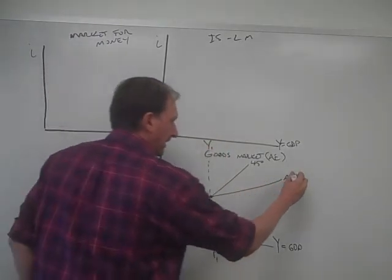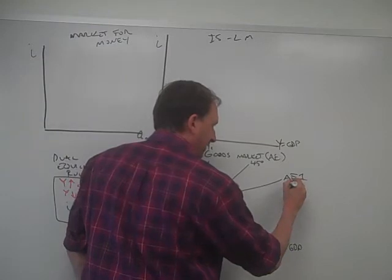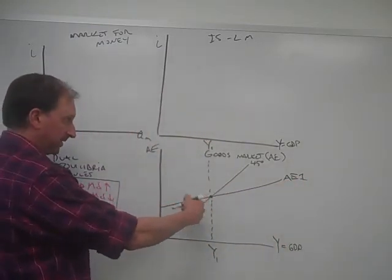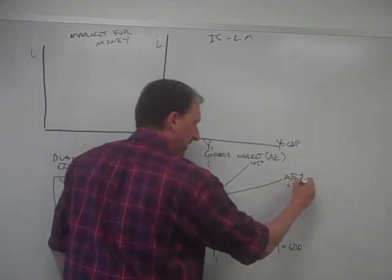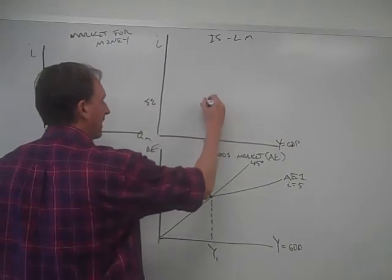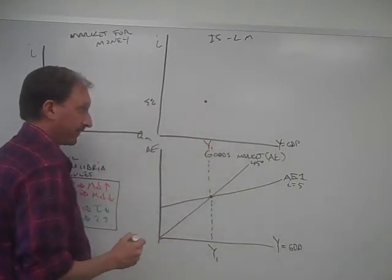So AE assumes that we have an interest rate because investment is one of the components of AE, right? C plus I plus G plus NX. Maybe I equals 5%. So let's find 5% on here. And then Y1, and that's that point right there.